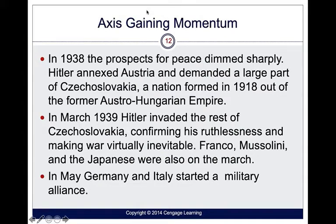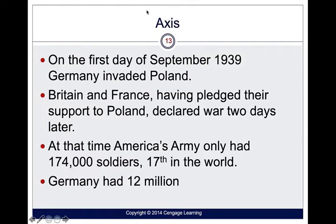In the European theater, the Axis gained momentum. Hitler ran through Austria and demanded a large part of Czechoslovakia, then invaded the rest of Czechoslovakia in 1939. Franco, Mussolini, and the Japanese were also on the march. Germany and Italy started a military alliance. On September 1, 1939, Germany invaded Poland, and England and France declared war two days later. At that time, America only had 174,000 soldiers compared to Germany's 12 million.